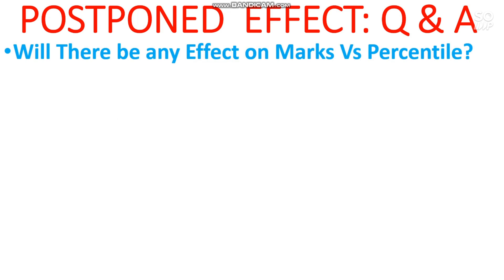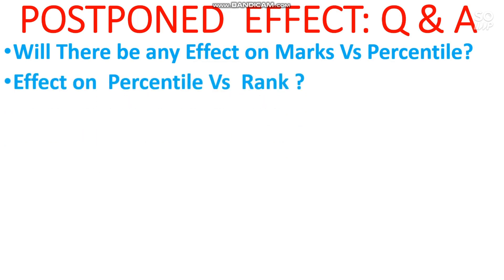The next question: effect on percentile versus rank. Yes, there will be an effect. If the number of students decreases in the next attempt, you can get a good rank at a lower percentile. For example, if you get 95 percentile and around 11 lakh unique students appear across all four attempts, your rank will be around 55,000 to 56,000, but if only 10 lakh appear it could be around 50,000.